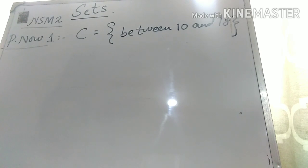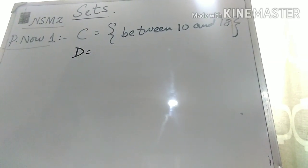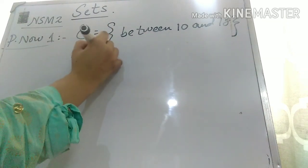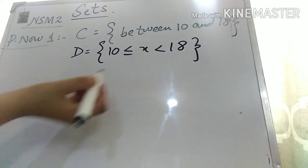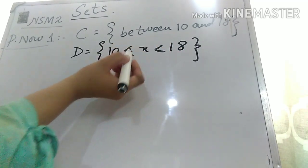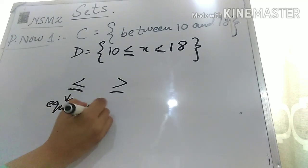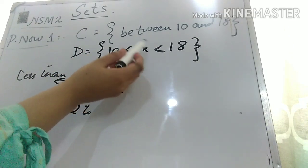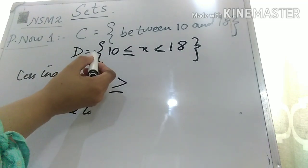D is equal to the set X such that X is a positive integer where 10 is less than or equal to X and X is less than 18. This symbol means less than, and when this small line is added it means less than or equal to. So 10 less than or equal to X means X is greater than or equal to 10, and less than 18 means X is less than 18.